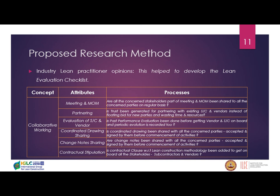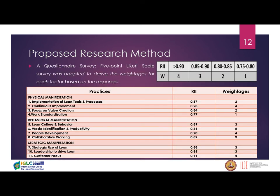The third objective was to determine weightages — whether to give common weightages to all parameters or vary them. We conducted a five-point Likert scale survey of industrialists and lean practitioners within India. Using this Likert scale, we applied the Relative Importance Index (RII) tool and obtained scores, assigning weightages — for example, RII from 0.75 to 0.8 receives a certain weight. These are the weightages collected from the data.